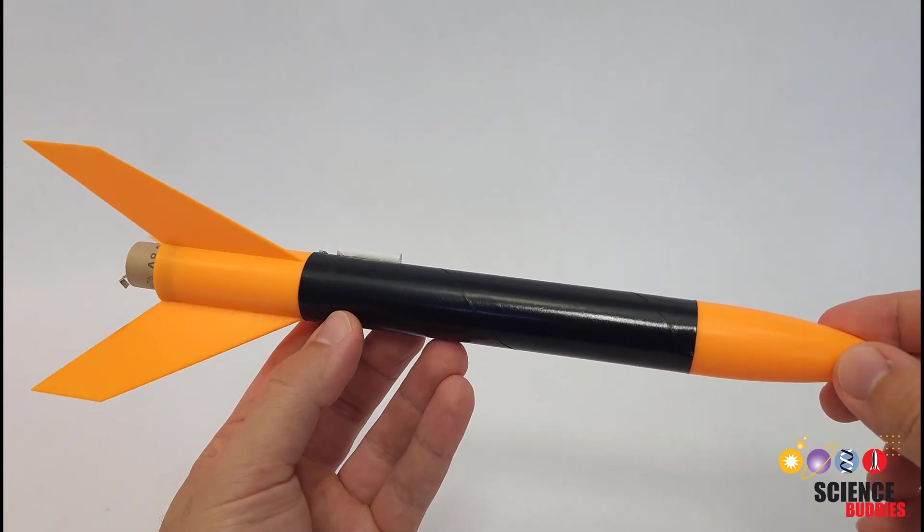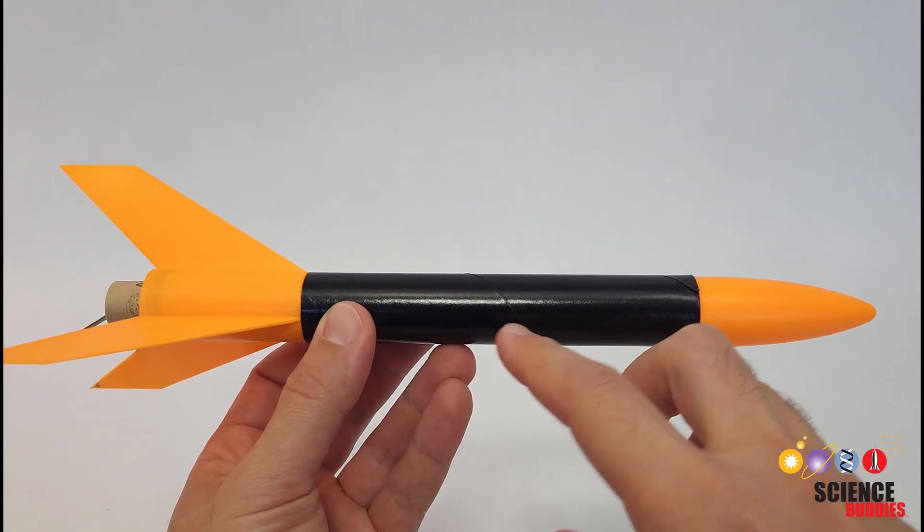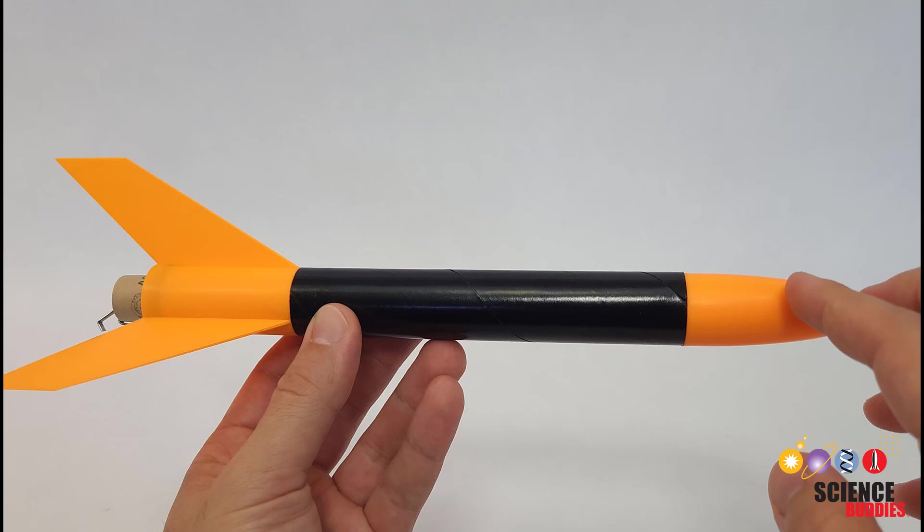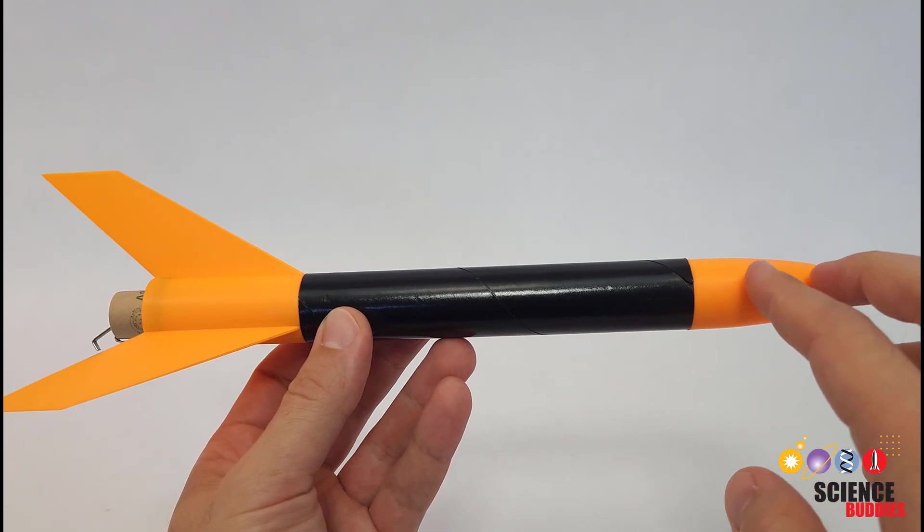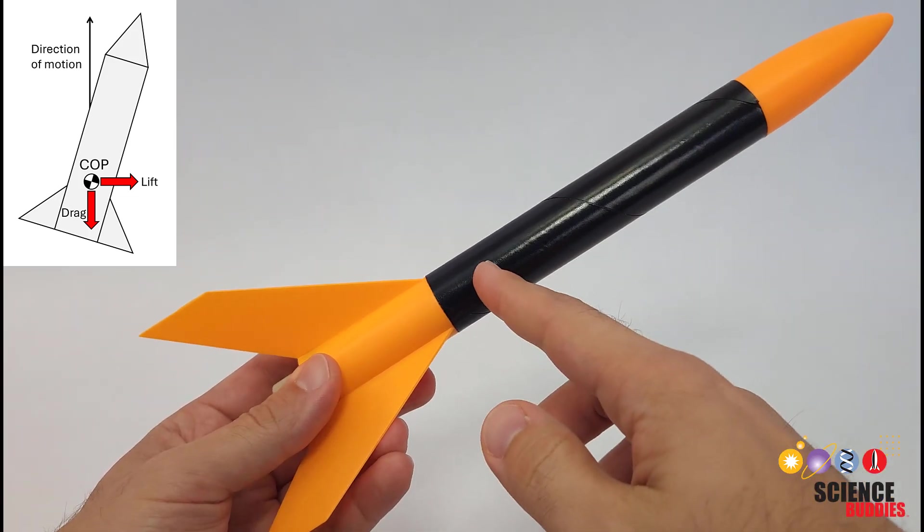That's it for center of mass. Next we need to talk about center of pressure. Air pressure acts along the entire surface of a rocket. Just like we can with gravity and center of mass, we can treat the resulting force from that air pressure as if it acts on a single point, the center of pressure.